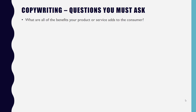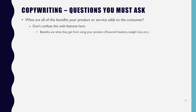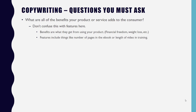Know all the benefits your product or service adds to the consumer, and don't confuse this with features — they are very different. Benefits are what they get from using your product: financial freedom, weight loss, vacations, no longer having to work a regular 9-to-5, free time, time with family. Features are things like number of pages, how many hours of video are in the course, or how many video lessons there are. Make sure you know all the benefits.